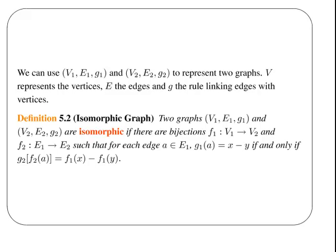This is an important definition. Two graphs are isomorphic if there are bijections. Remember, bijections from functions. F1 mapping from V1 to V2. And F2, which is another mapping, E1 to E2.